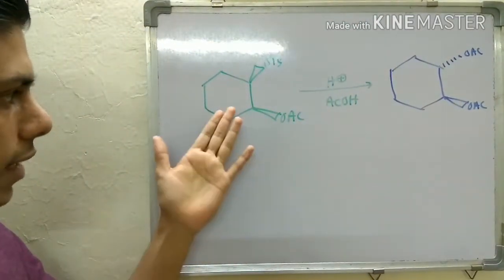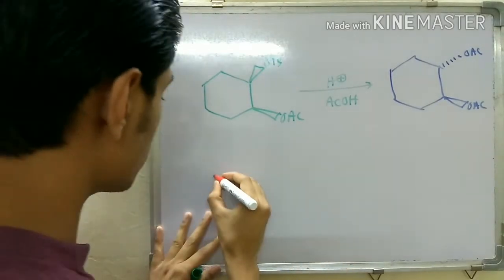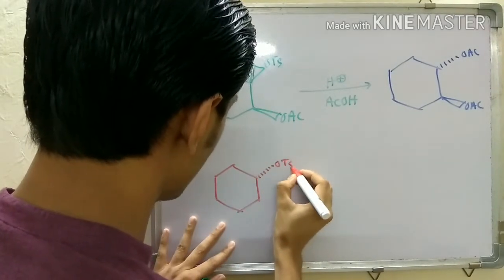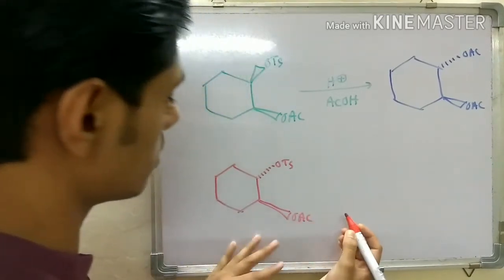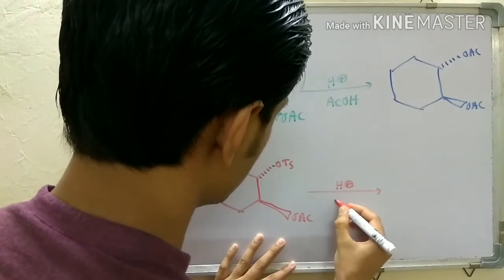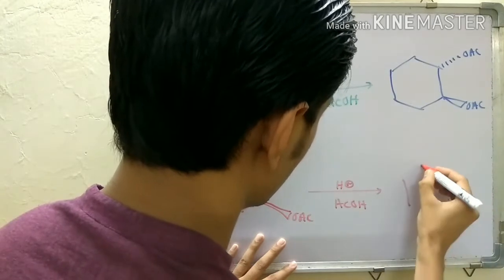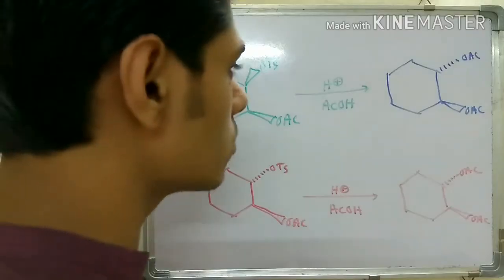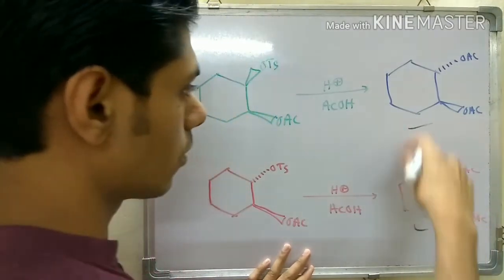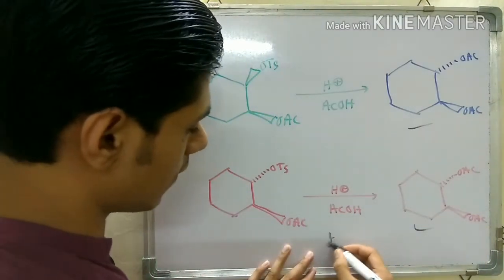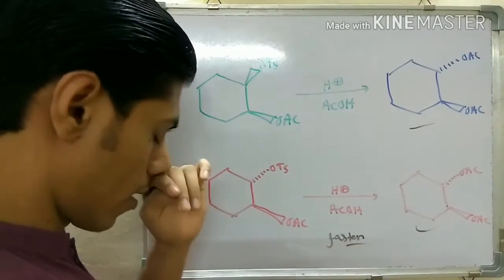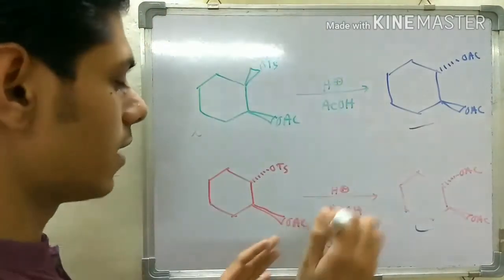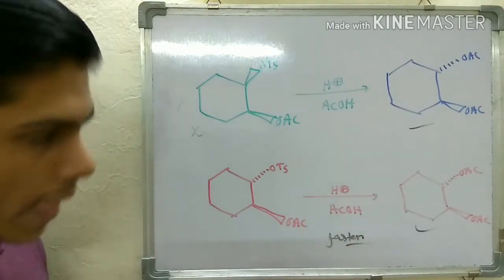Now, instead of starting with that molecule, if you start with this one where you have the tosylate group on the opposite side and the OAc group on this side, and you react it with H+ in acetic acid, you get the same product. So in both cases you get the same product, but this second reaction is very much faster - like a thousand times faster than the first reaction. Why is there this difference?